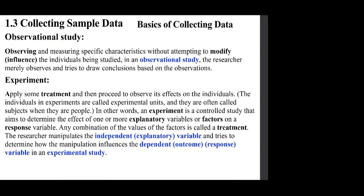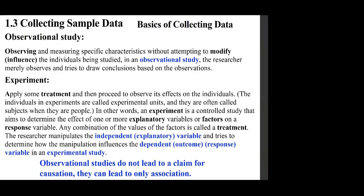Experiment: apply some treatment and then observe its effects on the individuals. In an experiment, individuals are called experimental units and often called subjects when they are people. An experiment is a controlled study that determines the effect of one or more explanatory variables on a response variable. The researchers manipulate the independent variable and determine how it influences the dependent response variable. Observational studies do not lead to claims of causation — they can lead only to an association.